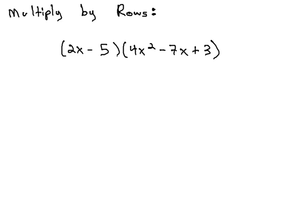As we do, we're going to multiply the polynomials 2x minus 5 by 4x squared minus 7x plus 3.